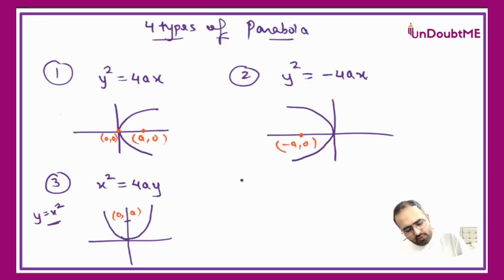Now comes the fourth one, just opposite to this one: x² = -4ay. You can very easily guess it - if that was an upward parabola, this one will be a downward parabola. This concept is kind of related to quadratics because these are the quadratics only. This will be (0, -a).